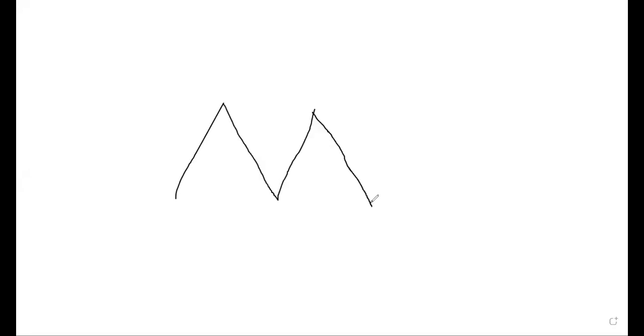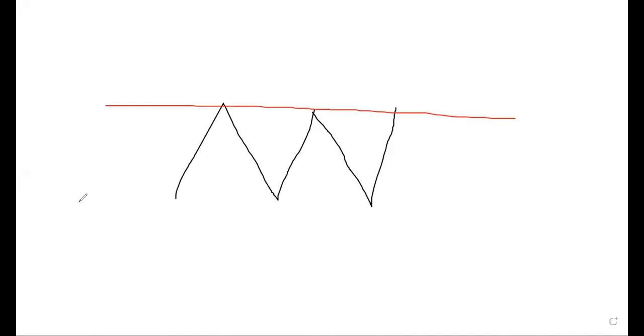I'm showing the bounce on my screen. When you have a swing like this in the market — this goes up, this comes down, this goes up, this comes down, this goes up — you put your channel lines here. Let's say you put your lines here. Now, why do you put these lines?